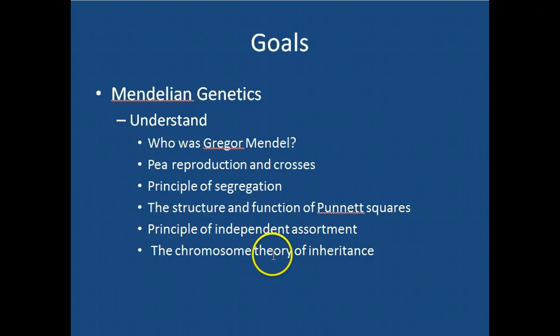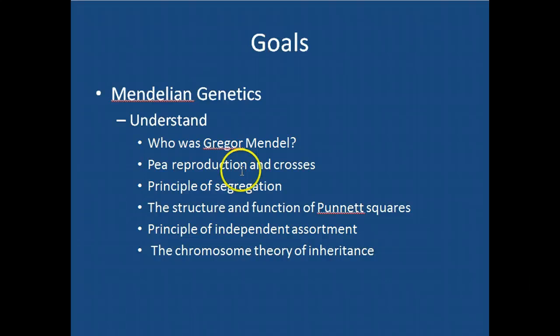In this screencast we'll get through a discussion of who Gregor Mendel was and talk about pea reproduction. The next screencast will introduce the principle of segregation and cover the structure and function of Punnett squares. Then in the third screencast we'll talk about the principle of independent assortment and the chromosome theory of inheritance.